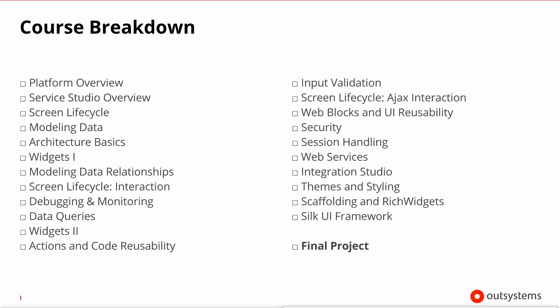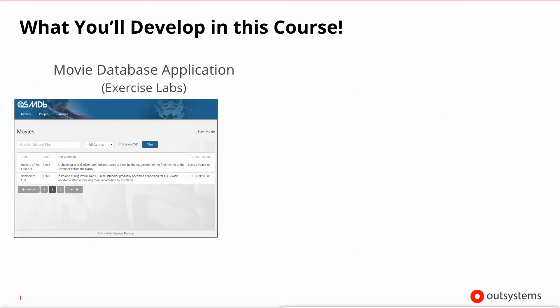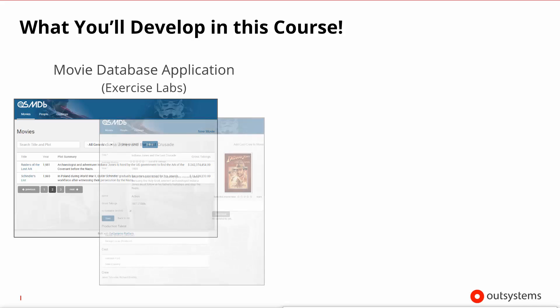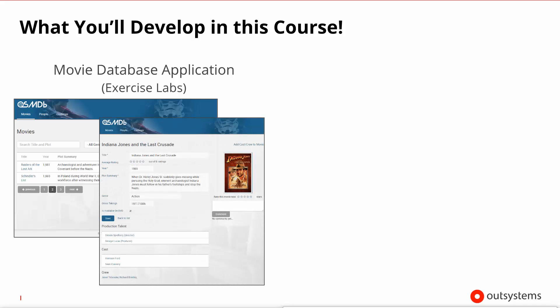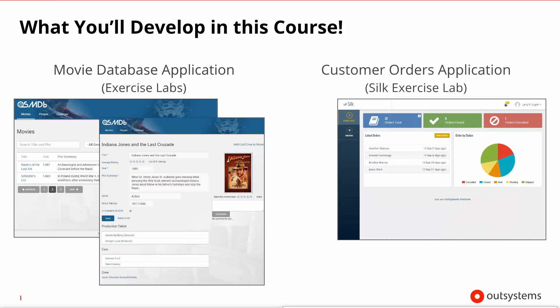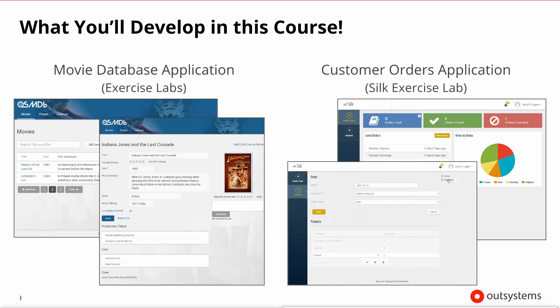This is a highly development-centric course — the theory only supports you actually getting your applications done. During the chapters, you will build a full-blown movie database application where you'll be able to manage movies, the people that work in movies, and cinemas that actually play these movies. This will take you from the most basic data modeling all the way to UI design and style sheet configurations. The Silk UI lesson brings with it another application where you'll be able to handle customers and the orders that they place, learning some of the beautiful patterns that the Silk framework provides.